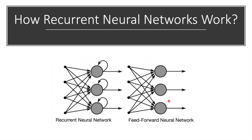The story in an RNN is different. In an RNN, information cycles through a loop. When it makes a decision, it considers the current input and also what it has learned from the input it received previously. Therefore an RNN has two inputs: the present and the recent past. This is important, because the sequence of data contains crucial information about what is coming next, which is why an RNN can do things that other algorithms cannot.